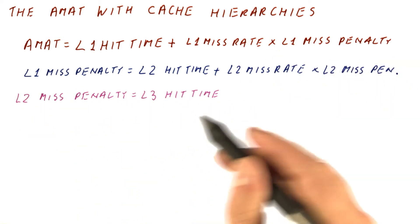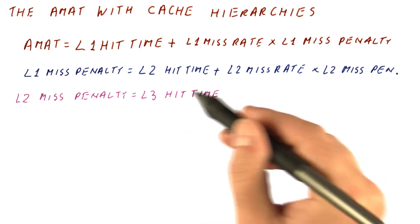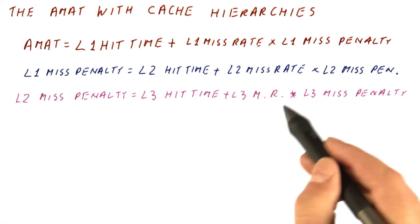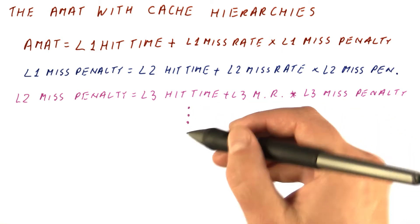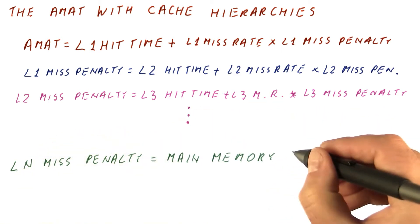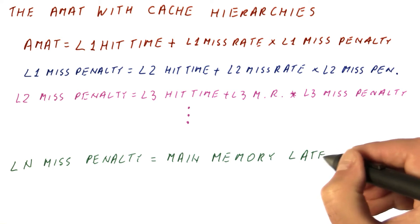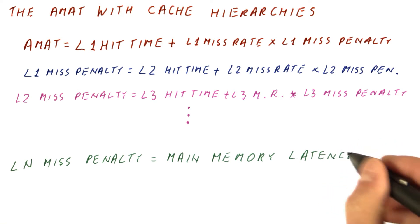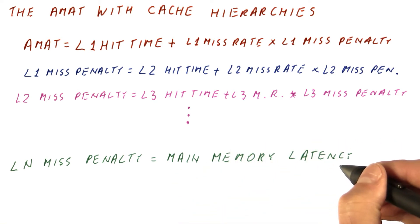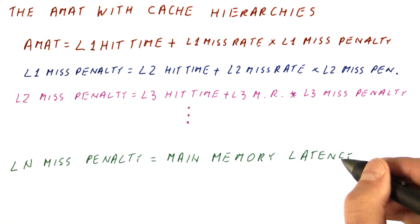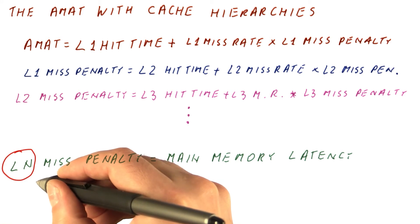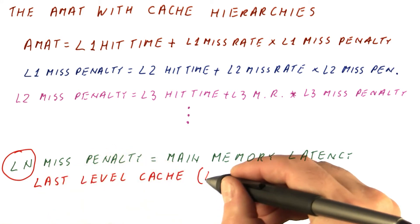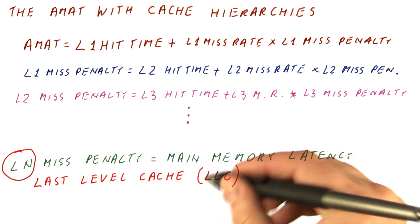And the L2 miss penalty is the L3 hit time plus the L3 miss rate times the L3 miss penalty, and so on until at some point we have a cache whose miss penalty is equal to the main memory latency because there are no more caches beneath it. This cache whose misses go directly to memory is called the last level cache, or LLC.